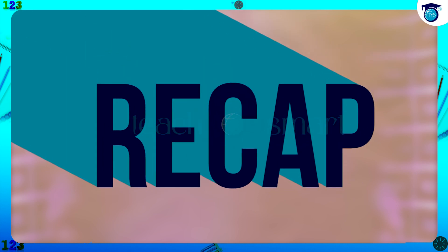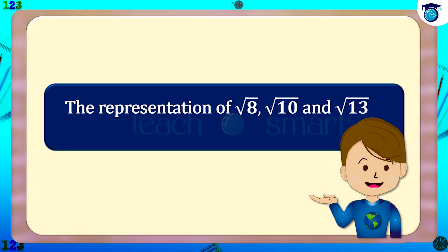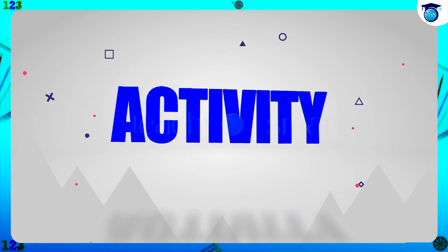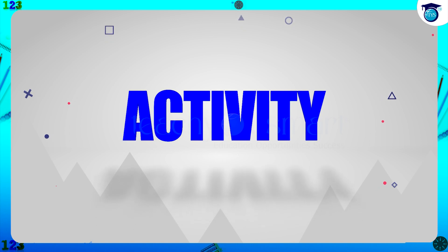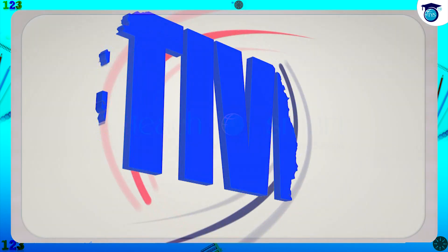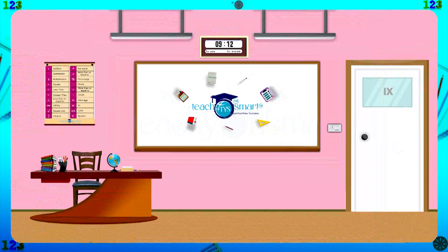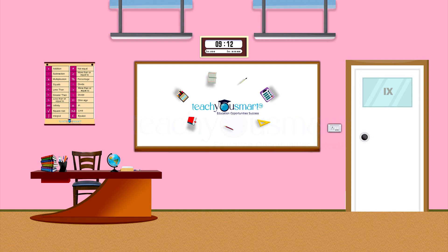Let's recall what we discussed today. We learned the representation of √8, √10, and √13 on a number line. Before winding up, let's check how much you understood by doing an activity: represent √17 on a number line. That's all for now — see you all in the next class.